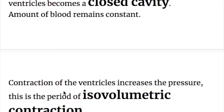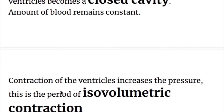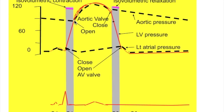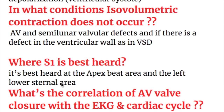The effect of the AV valve closure is that the ventricle becomes a closed cavity during isovolumetric contraction. Isovolumetric contraction lasts between the closure of the AV valves and opening of the semilunar valves. In what conditions does isovolumetric contraction not occur? Conditions which cause a defect in the valves — AV and semilunar valvular defects — cause loss of isovolumetric contraction.